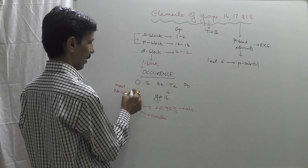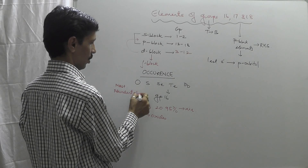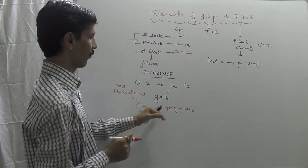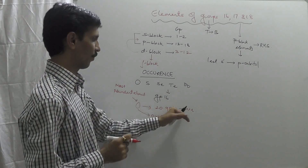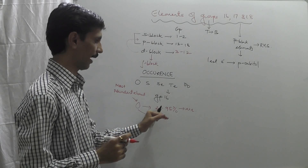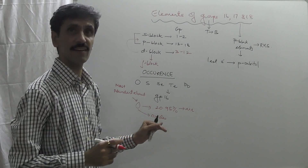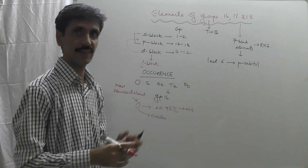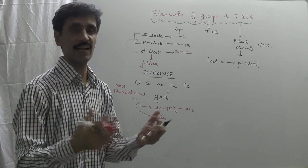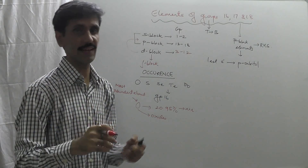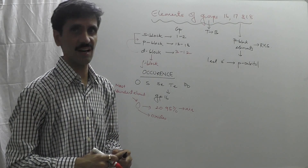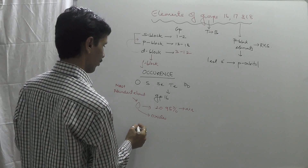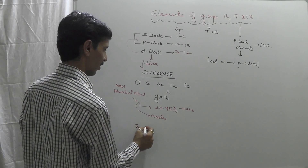By volume, oxygen is present at 20.95%, and in the Earth's crust it combines with metals to form metal oxides, which are generally solids present in the Earth's crust. Now talking about sulfur — sulfur is generally present in the form of sulfates.